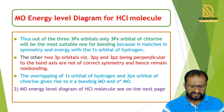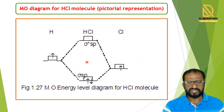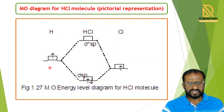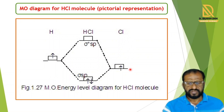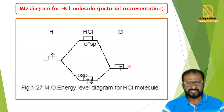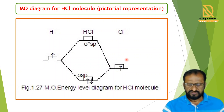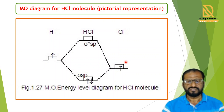The overlapping of the 1s orbital of hydrogen and the 3px orbital of chlorine gives the sigma bonding molecular orbital and the sigma-star anti-bonding molecular orbital. In the MO energy level diagram for HCl, the hydrogen atomic orbital (1s) is shown on the left side, and the chlorine 3px atomic orbital is shown on the right. The other atomic orbitals — the first shell, second shell, and 3s atomic orbital of chlorine — have lower energy and do not take part in bonding with hydrogen.